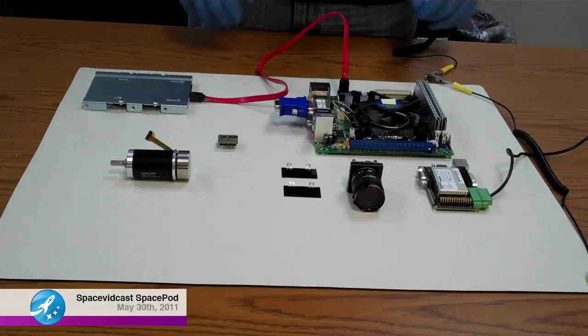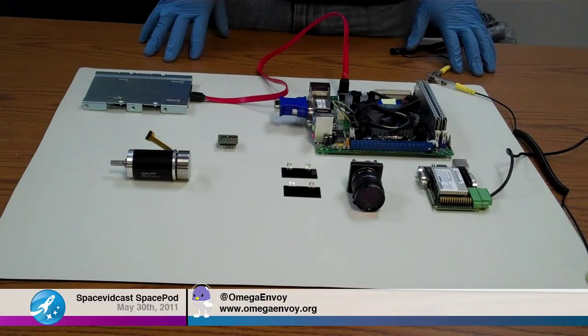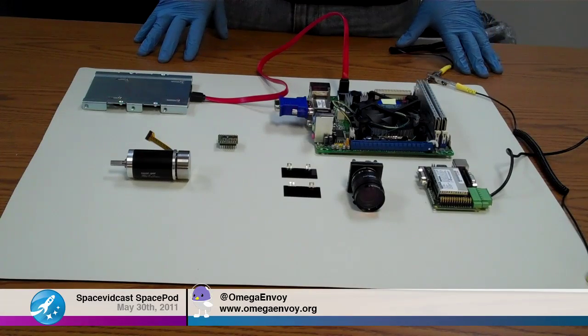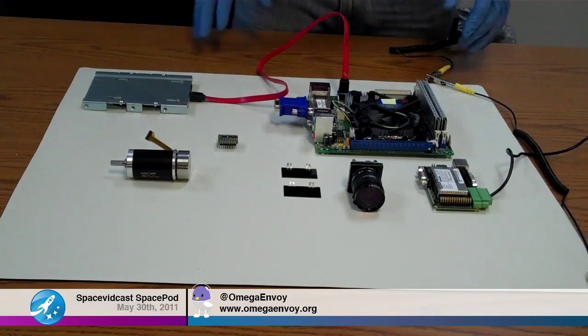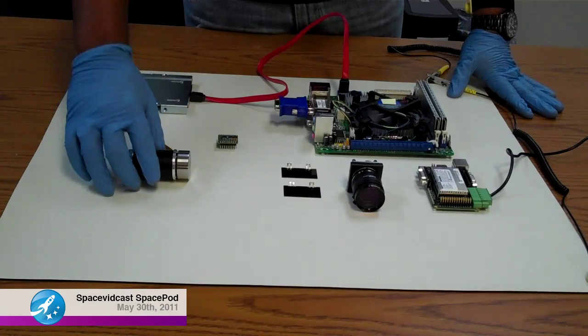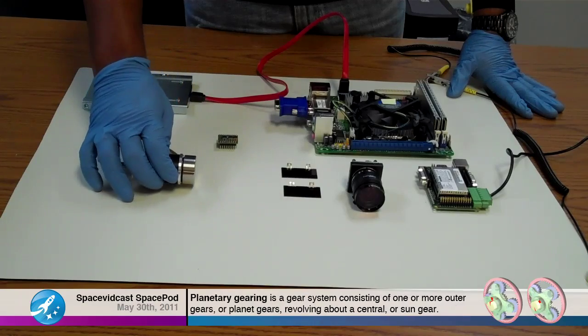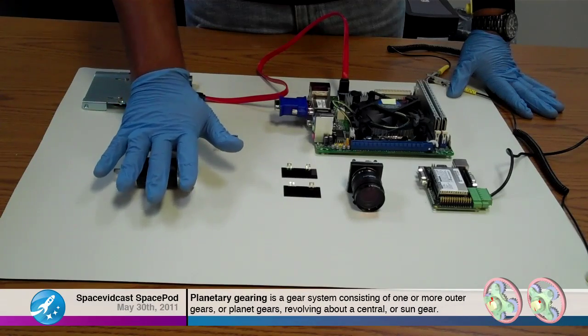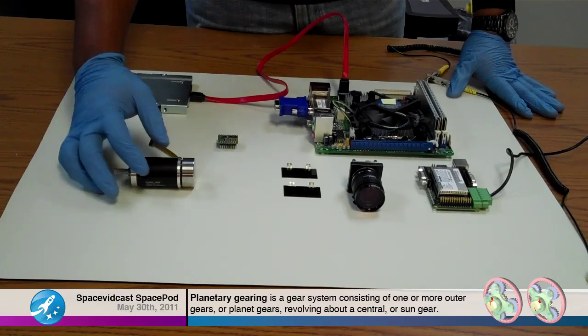This is actual hardware that will be going on our fourth rover prototype and some of it will be going on our actual flight-ready rover for the mission. Now, can you give us an idea of some of the basics of what we're looking at right now? All right. So I'll start from over here. This is a motor with a planetary gear head meant for Earth-based applications here for our fourth rover prototype.